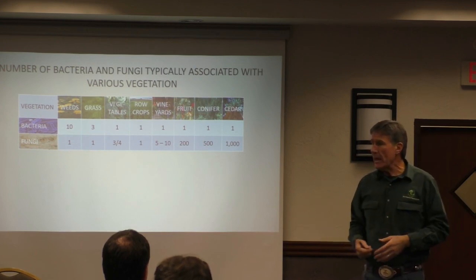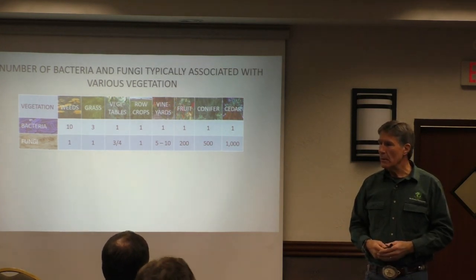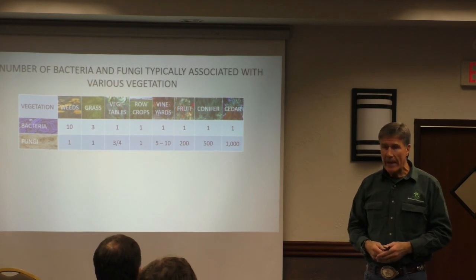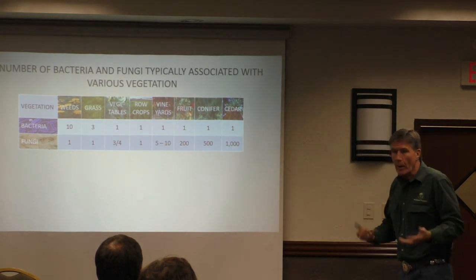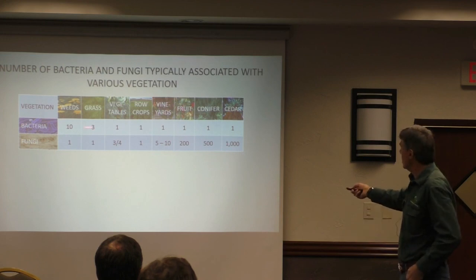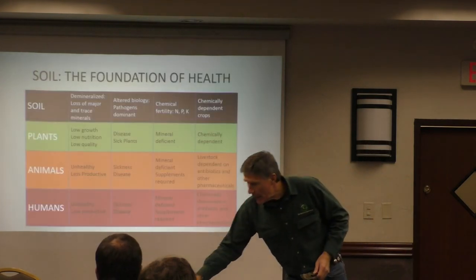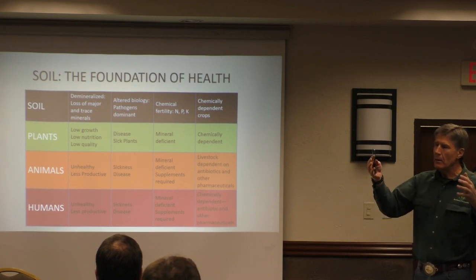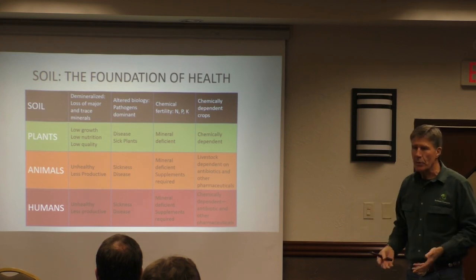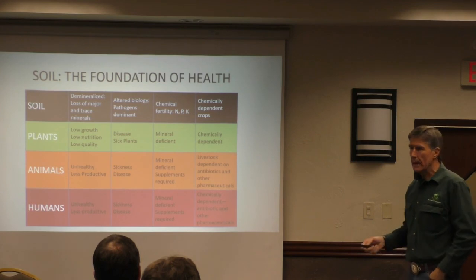Whatever plant we're growing, there is a microorganism ratio that helps the plant and favors its growth. Just try putting a blueberry in a pH 8 soil — I don't care if you give it nutrition, that plant is going to die. It has to have the acidity. Nature has a method of placing these microorganisms, and if we manage the biology, we don't put bacterially dominated manure on our apple trees. That will make them sick because they need fungi.